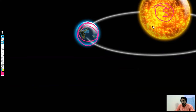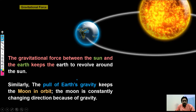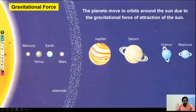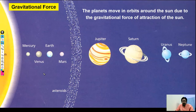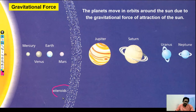This one is our sun, and this one is our earth. The earth is revolving around the sun, and this is because of the gravitational force. Every planet around the sun is revolving because of the gravitational force. Lots of asteroids are also revolving around the sun because of this gravitational force.